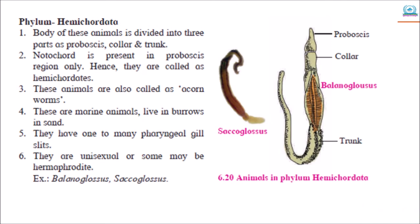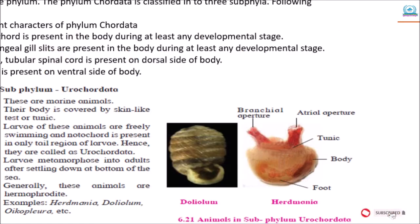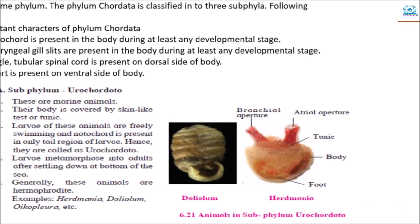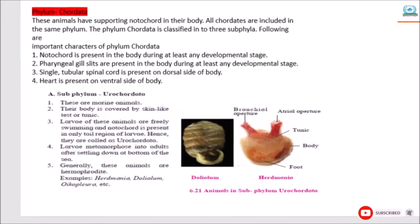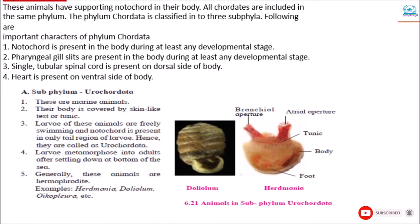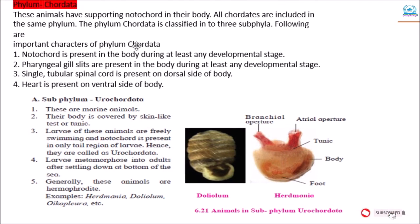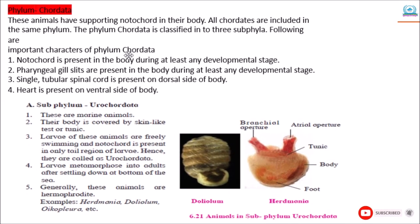Next phylum is Chordata. These animals have a supporting notochord in their body. All chordates are included in the same phylum. The phylum Chordata is classified into three subphyla: Urochordata, Vertebrata, and Cephalochordata.